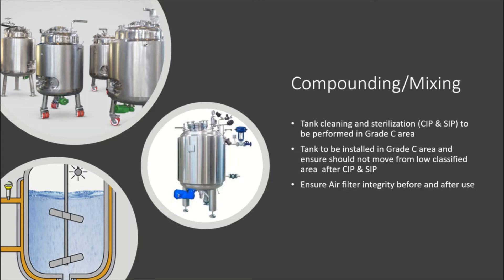Tanks will be cleaned and CIP (Clean-in-Place) and SIP (Sterilize-in-Place) will be performed before processing any formulation activity. Ensure the tank does not move from a lower classified zone once it is clean and ready for manufacturing. Also ensure air filters are installed and integrity is verified before and after use as per written procedure.